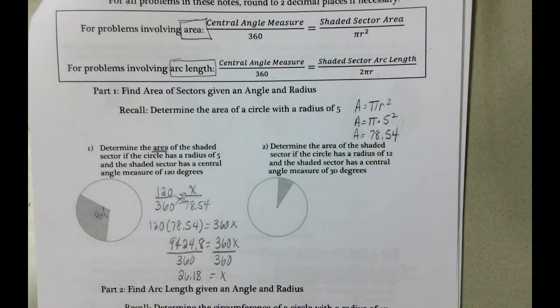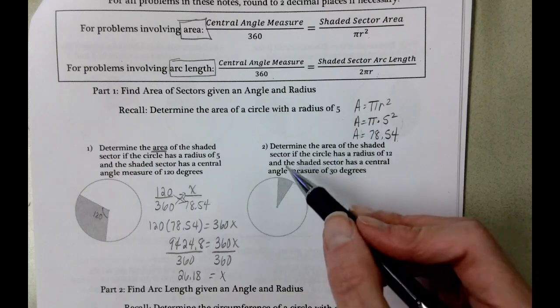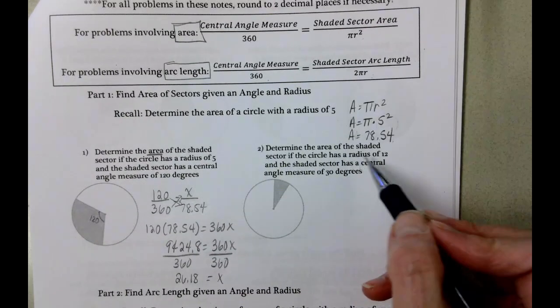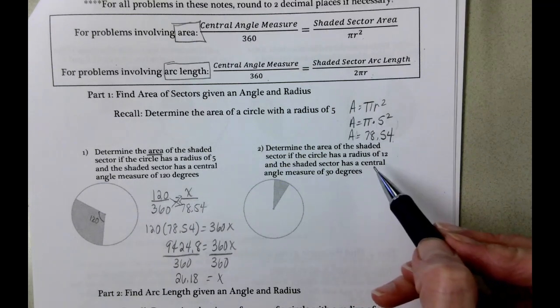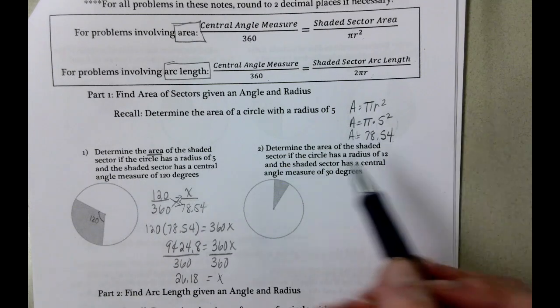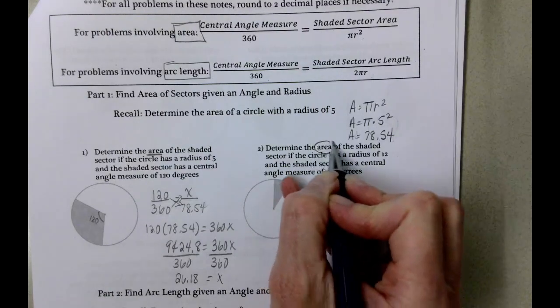Number 2. Determine the area of the shaded sector if the circle has a radius of 12, and the shaded sector has a central angle measure of 30 degrees. So we're still going to be working with area.